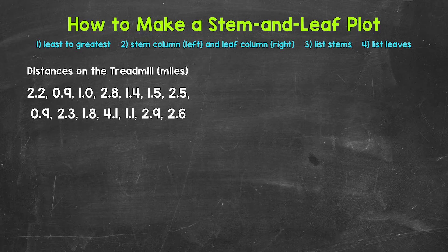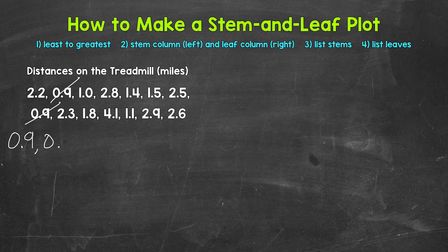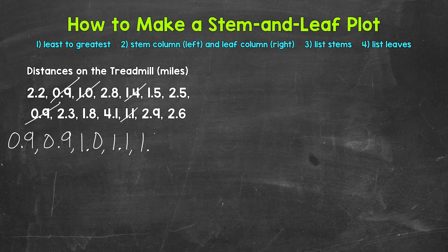Let's start with the shortest distance — that's going to be nine tenths of a mile, 0.9, and we have two of those. Then we have 1.0, 1.1, 1.4, 1.5, and 1.8.